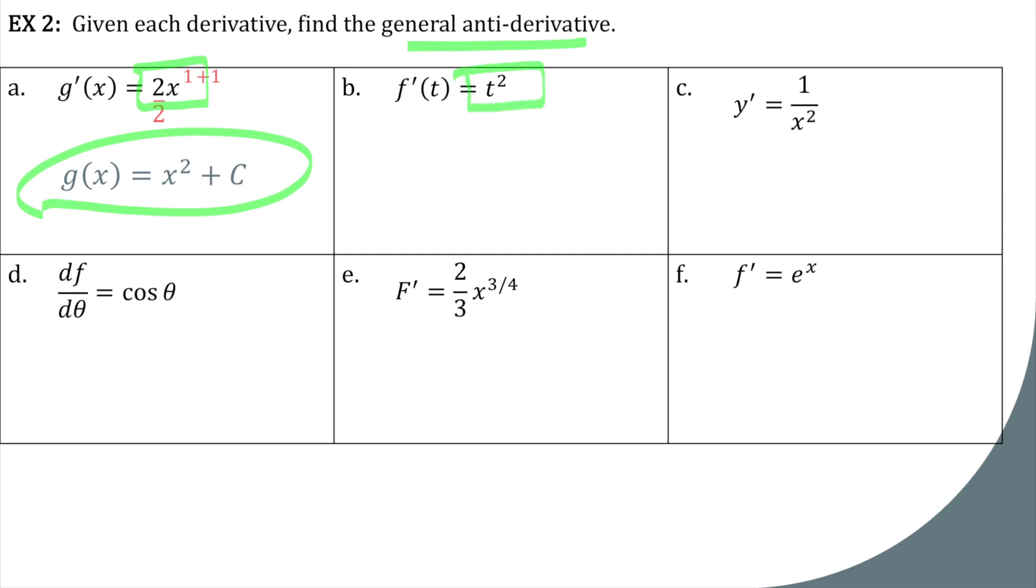Okay, antiderivative of t squared. We're going to add 1 to the power and then divide by the new power. So we get 1 third t cubed plus c.